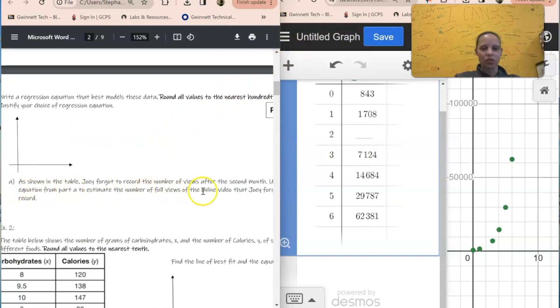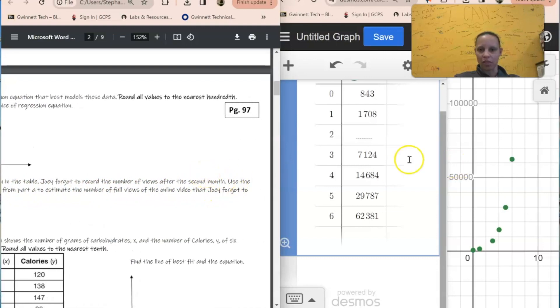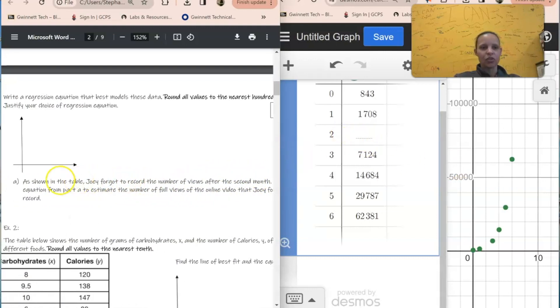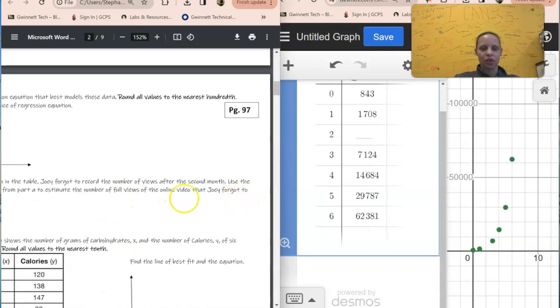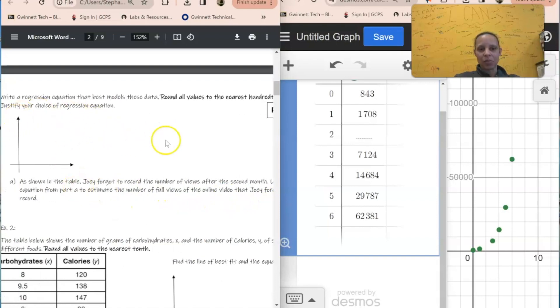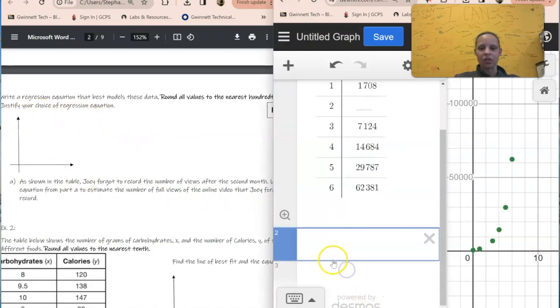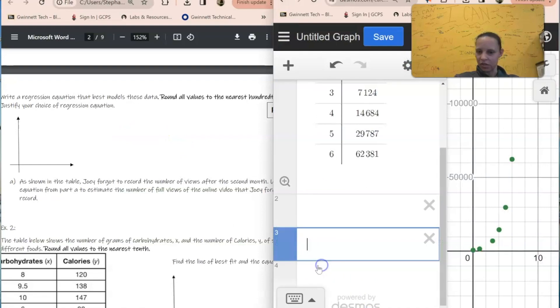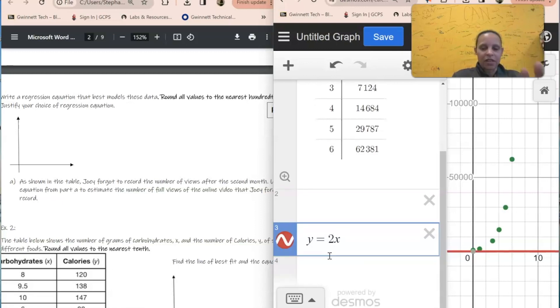Then you're going to come here. As shown in the table, Joey forgot to record the number of views after the second month. So right here you see that he forgot. Use the equation - so whatever equation you have written here from part A - to estimate the number of full views online that Joey forgot to record. So what you're going to do is type in that equation right here, so whatever that equation was. Let's say - and I'm not saying this is the answer, I'm just saying let's say my equation was this. This is my equation, and it doesn't matter what the equation was. This is the equation, but it's not, because I want you to do this question.